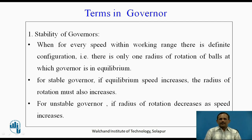Stability of governor: when for every speed within the working range there is a definite configuration — that is, there is only one radius of rotation of the balls at which the governor is in equilibrium — that is known as stability of governor.